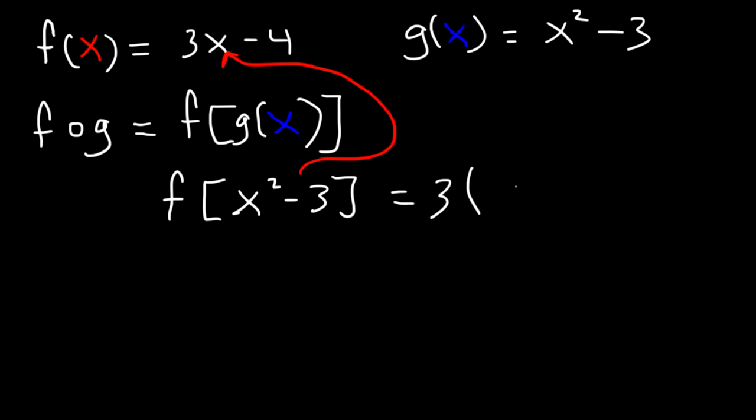So this is going to be 3 times x squared minus 3 minus 4. Now let's distribute the 3. That's 3x squared minus 9 minus 4, which is 3x squared minus 13.